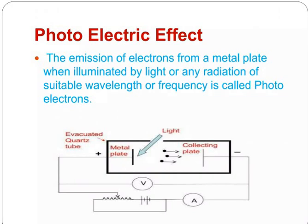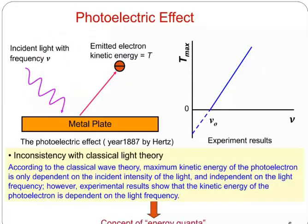What is photoelectric effect? The emission of electrons from a metal plate when illuminated by light or any radiation of suitable wavelength or frequency is called photoelectric effect. You can see here incident light with frequency on metal surface or metal plate emits electrons with kinetic energy. Inconsistency with classical light theory: According to classical wave theory, maximum kinetic energy of photoelectrons is only dependent on the incident intensity and independent of the light frequency. However, the experimental results show that the kinetic energy of the photoelectron is dependent on the light frequency.